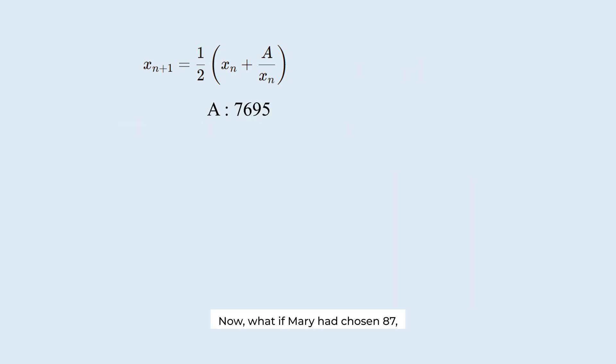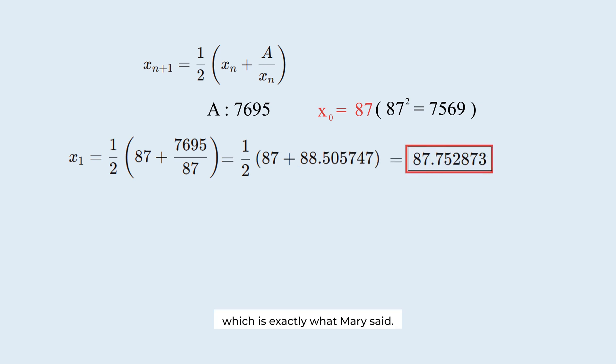Now, what if Mary had chosen 87, the closest natural number to the square root, as the initial guess? The first approximation is this, which is exactly what Mary said.